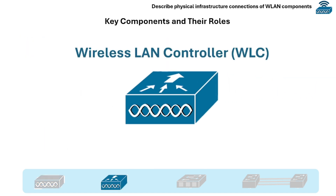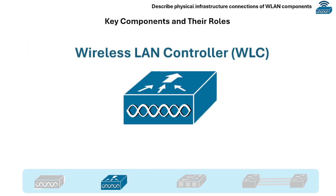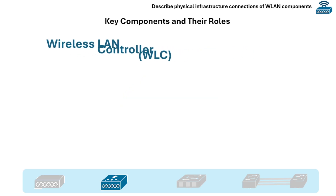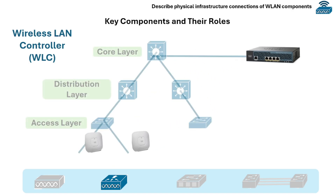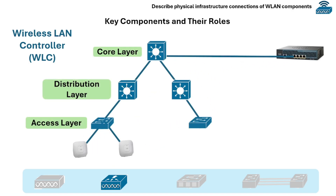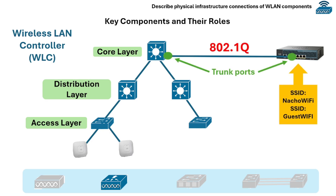The next key component is the wireless LAN controller. This is a central device that manages and controls all lightweight access points. The WLC connects to a distribution or core switch, and the ports on the WLC are typically 802.1Q trunk ports to handle multiple VLANs, one for each SSID.